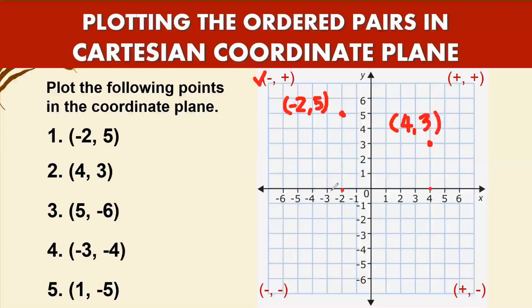Number three is five, negative six. Five is positive and negative six is negative, so positive-negative is in quadrant four. From five on the x-axis, go down six units. Label the point five, negative six.